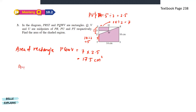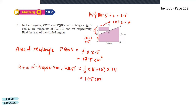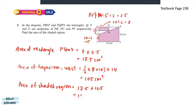Next, for the area of trapezium URST: 1 over 2 times the sum of the parallel lines — 5 plus 10 — times the height, which is 14, giving us 105 cm squared. The area of the shaded region is the sum of both areas: 17.5 plus 105, which gives us 122.5 cm squared.